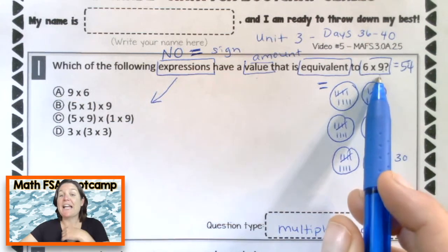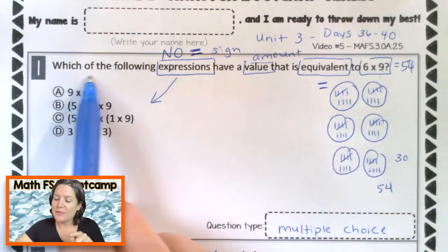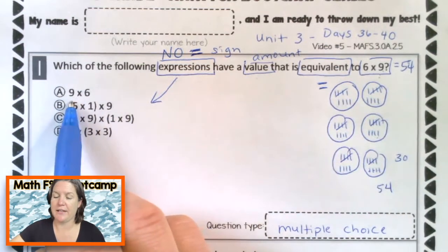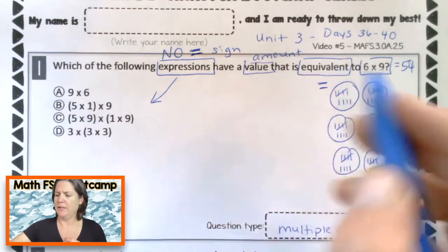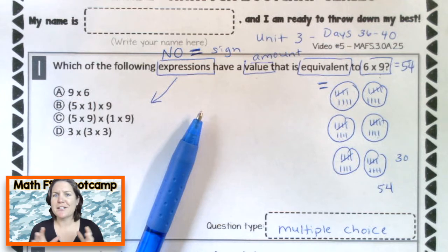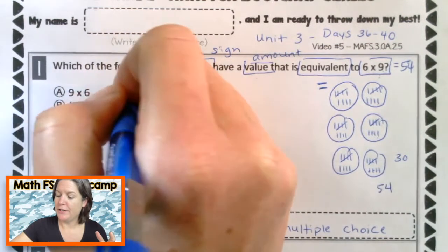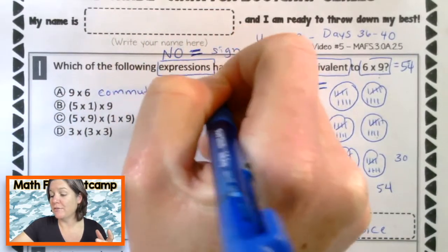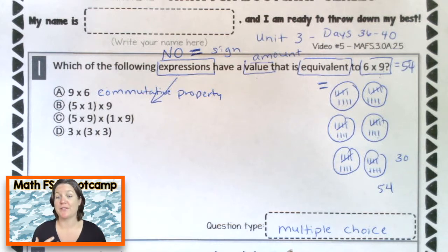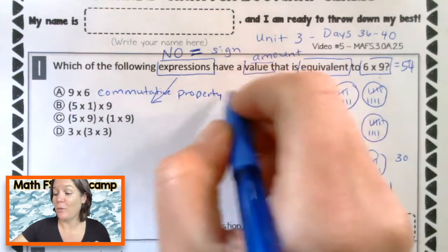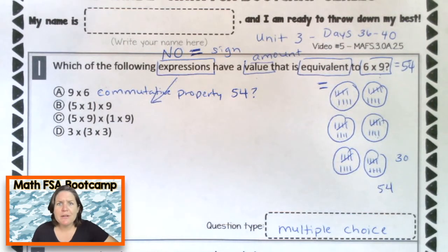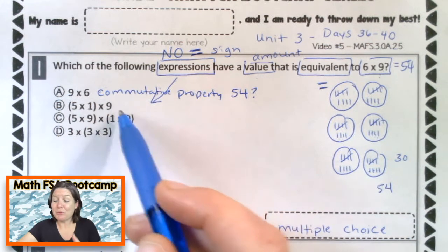So now that we know that six times nine equals 54, we have to go and see which of these expressions also have a value equal to 54. Let's look at choice A. Choice A says nine times six. Six times nine — flip flop those factors — nine times six. That's the commutative property of multiplication. The commutative property states: if you change the factors around, you'll still arrive at the same product. So nine times six does equal 54. But should we just mark A and forget about the rest? No — we have to go through each one and make sure.